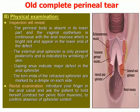On rectal examination, introduce your finger into the anal canal and ask the patient to contract her pelvic floor muscles to confirm the absence of sphincter control. As seen in this picture, this is the bulbocavernous muscle, the transverse perineal muscle, internal anal sphincter, external anal sphincter, and this area is the rectal mucosa.